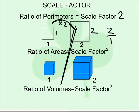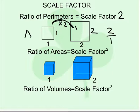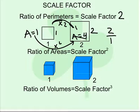If we start asking what's the scale factor for the areas, you may think it should be the same — it should be 2. But when we look at the areas, the area of the 1 by 1 is 1, whereas the area of the 2 by 2 is 4. Going from area to area, that ratio is 4 over 1, or we multiply by 4. Which means we actually take the scale factor and square it to get 4.